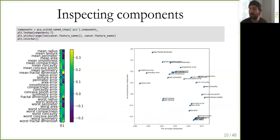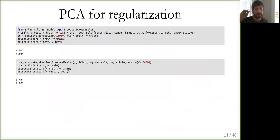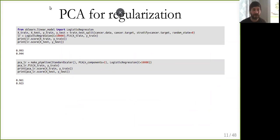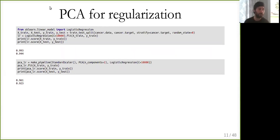Visualization is one use of PCA — quite useful for exploratory analysis. Another common use for PCA is regularization. If you're interested in inference, this is a common technique in statistics: you can use PCA to get rid of collinearities in your data. We discussed when talking about linear models that if you have collinearities, standard linear regression won't work. If you have many more features than samples, you need to regularize. However, regularization impacts the interpretability of your coefficients.